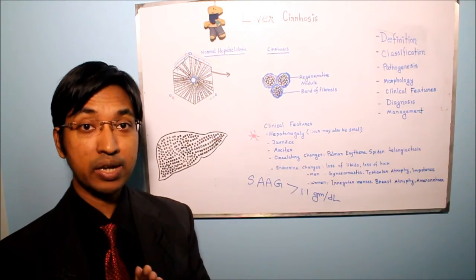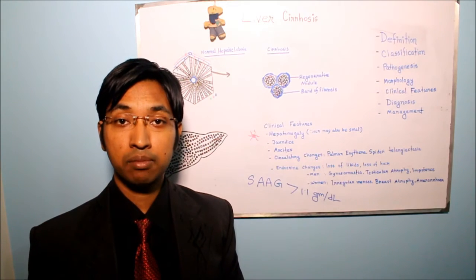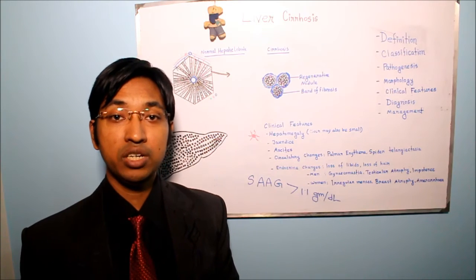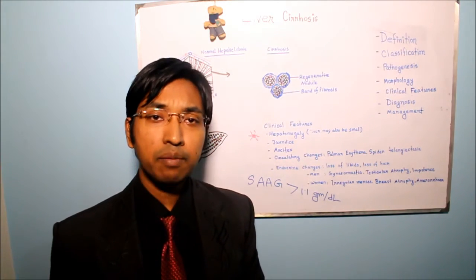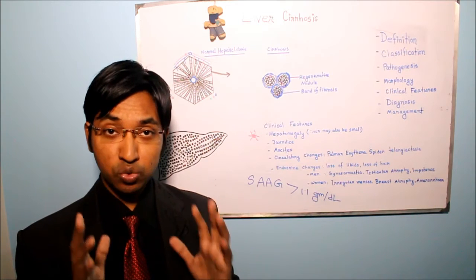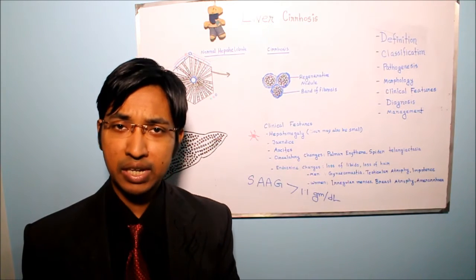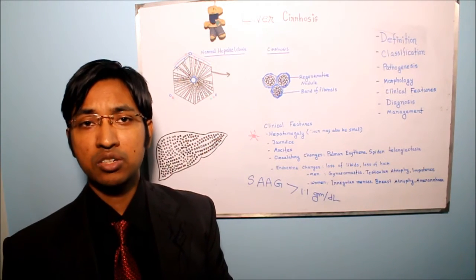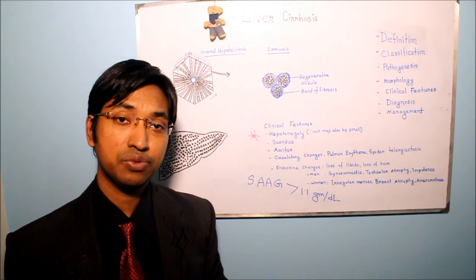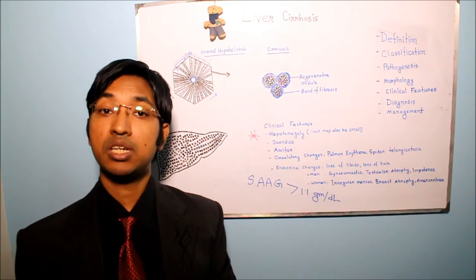The common sites include the lower end of the oesophagus, the lower end of rectum and anal canal, around the umbilicus, and at the fissure of ligamentum venosum. At the lower end of the oesophagus, the oesophageal tributaries of the left gastric vein communicate with oesophageal tributaries of the hemiazygous vein. The left gastric vein belongs to portal circulation, whereas the hemiazygous vein belongs to systemic circulation — this is an example of a portosystemic shunt.